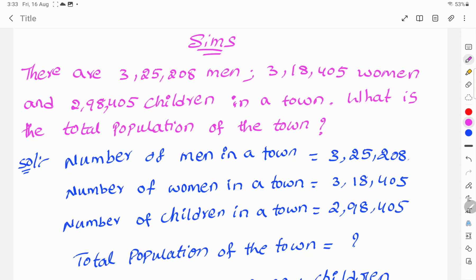So, to find the total population of the town, let's see the solution. Given that, the number of men in the town is 3,25,208, the number of women is 3,18,405, and the number of children is 2,98,405.